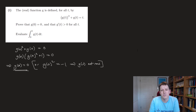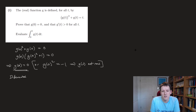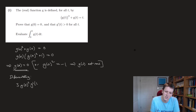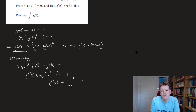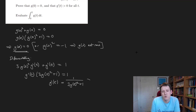Now proving g'(t) > 0. Differentiating implicitly: 3g(t)² · g'(t) + g'(t) = 1. So g'(t)(3g(t)² + 1) = 1, giving g'(t) = 1 / (3g(t)² + 1). The denominator is definitely positive, so g'(t) is greater than 0 for all t.